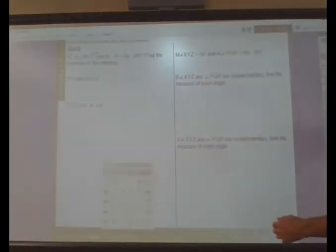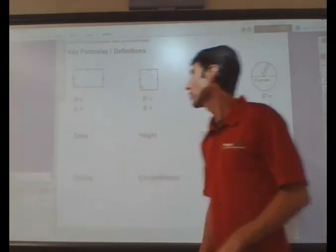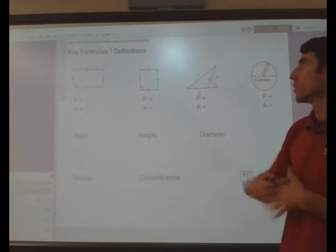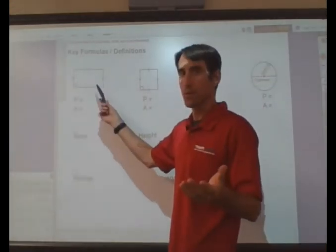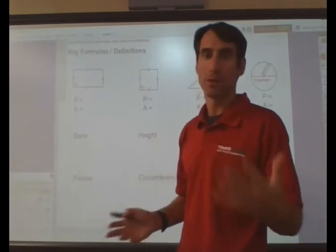Here we go. So we're going to be taking a look at several different key definitions. So we have a rectangle. A rectangle is defined by a quadrilateral, quad meaning four, lateral meaning sides.